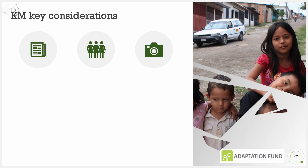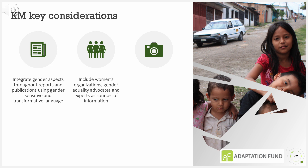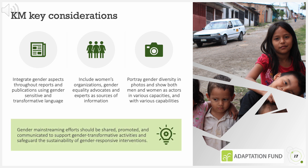Key considerations for knowledge management include: integrate gender aspects throughout reports and publications using gender-sensitive and transformative language; include women's organisations, gender equality advocates and experts as sources of information; portray gender diversity in photos and show both men and women as actors in various capacities and with various capabilities. Gender mainstreaming efforts should always be shared, promoted and communicated to support gender equality and sustainability of the project.